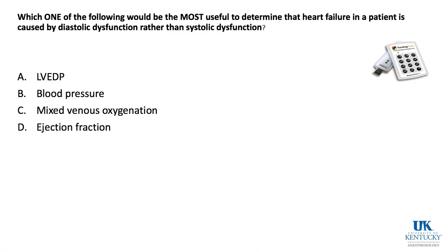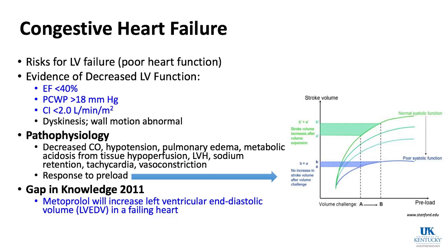The question: what is the most useful finding to determine that heart failure is caused by diastolic rather than systolic dysfunction? Both have high LVEDP. The key distinguishing feature is ejection fraction: the diastolic dysfunction patient has a preserved EF, while the systolic dysfunction patient has a low EF.